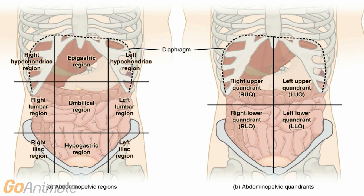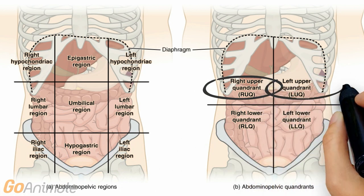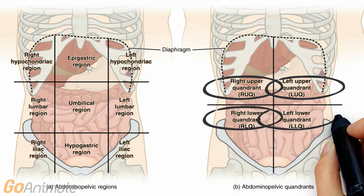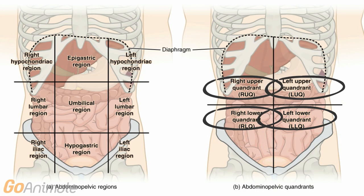The abdomen can also be divided into four quadrants with two planes intersecting at the umbilicus. The four quadrants are the right and left upper and right and left lower quadrants. Like the nine regions, the quadrants are used to locate anatomical structures such as organs. We hope you have learned something about anatomical terms and see you next time.